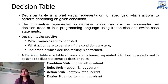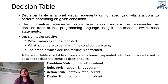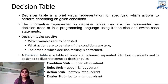A decision table is a brief visual representation for specifying which action to perform depending upon the given condition. The information represented in a decision table can also be represented in the form of decision trees, and in programming languages it is represented using if-then-else or switch-case statements. A decision table specifies which variable to be tested, what action to be taken, and the order of different actions.